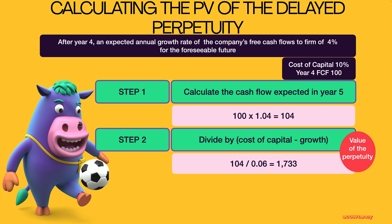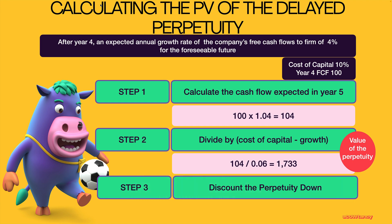That's the figure that we want. However, we need to discount that down — we need to discount it down for four years. So discount it down by 10%, dividing by 1.10 to the power of four. And that will give you an answer of 1184.